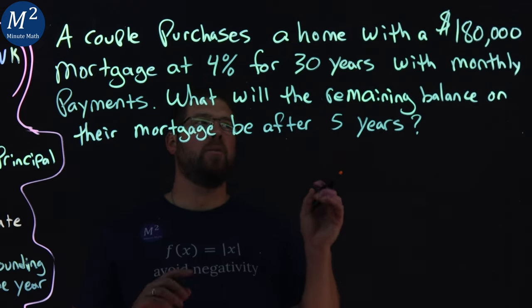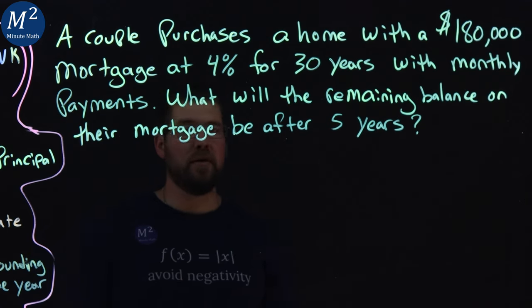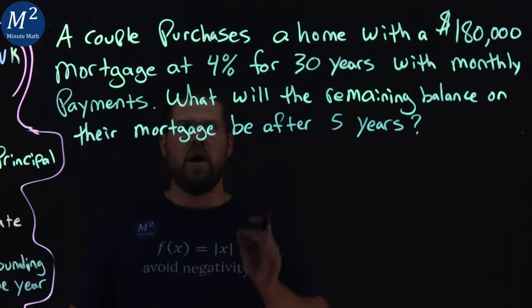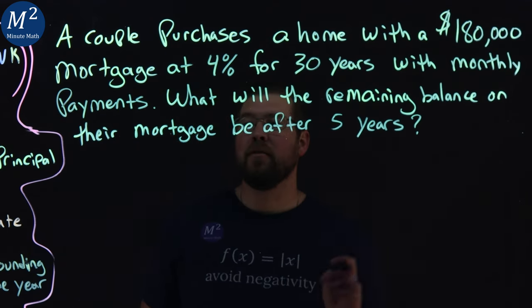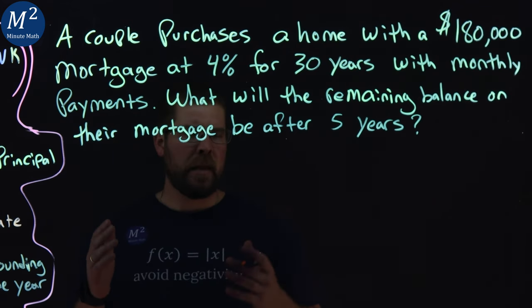A couple purchases a home with a $180,000 mortgage at 4% for 30 years with monthly payments. What will the remaining balance on the mortgage be after five years? Let's learn.